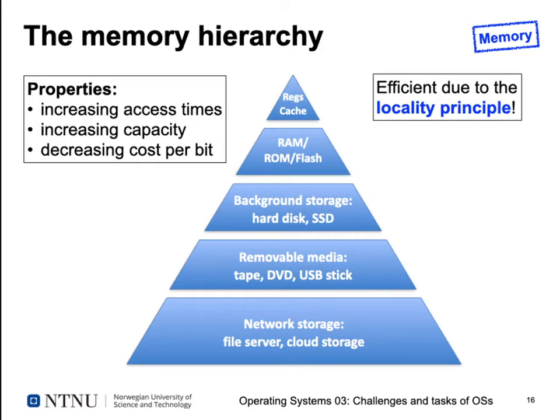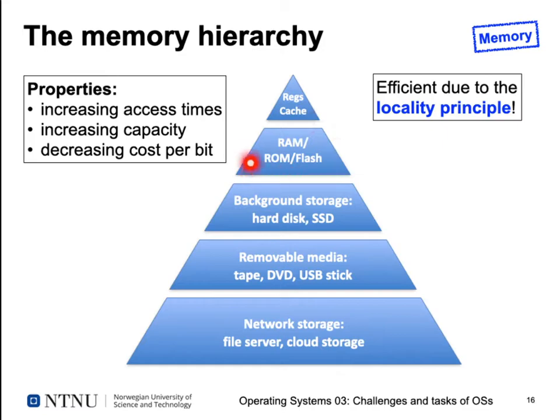The next thing our operating system has to administer is memory. Memory is a very important component of our computers. We have very fast and small memories like registers or caches usually on the CPU chip; we have main memory like ROM, RAM, and flash memory on the printed circuit board; and then external storage like hard disks and SSDs built into the computer.